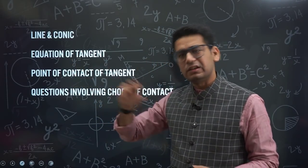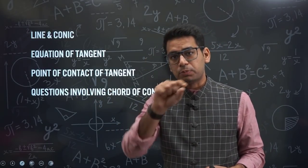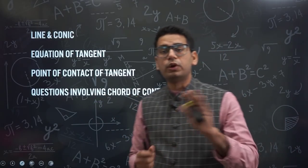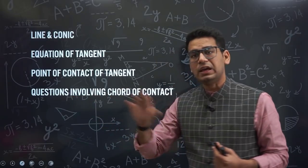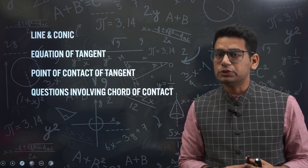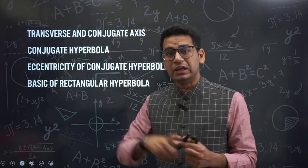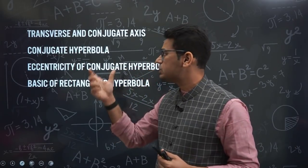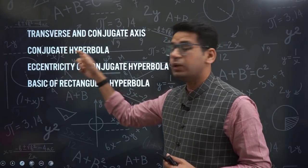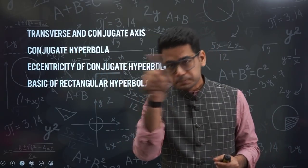Equation of a tangent in different forms — please cover this. Also, the point of contact of tangent — what happens, what is the point of contact — this is important for horizontal ellipse as well.